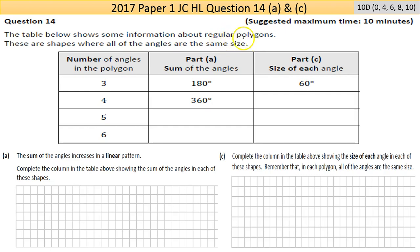Now regular polygons, all the angles are the same. So a polygon like that, all the angles between are equal. These are shapes where the number of angles in the polygon is three, four, five, and six, so it's going up by one each time.